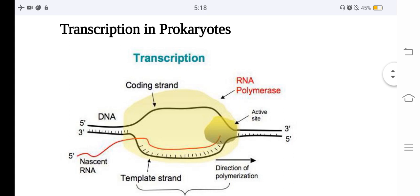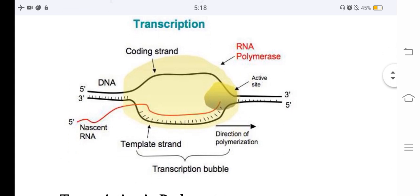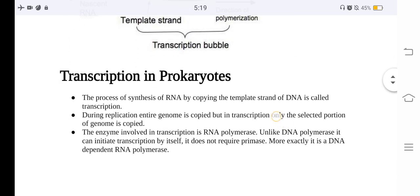We are going to learn about transcription in prokaryotes. Looking at this picture, we can see a transcription bubble. The 5 prime and 3 prime regions are present in the coding strand, and the 3 prime to 5 prime orientation is seen in the template strand. With the help of the template strand, an mRNA is created. This whole structure is termed a transcription bubble.